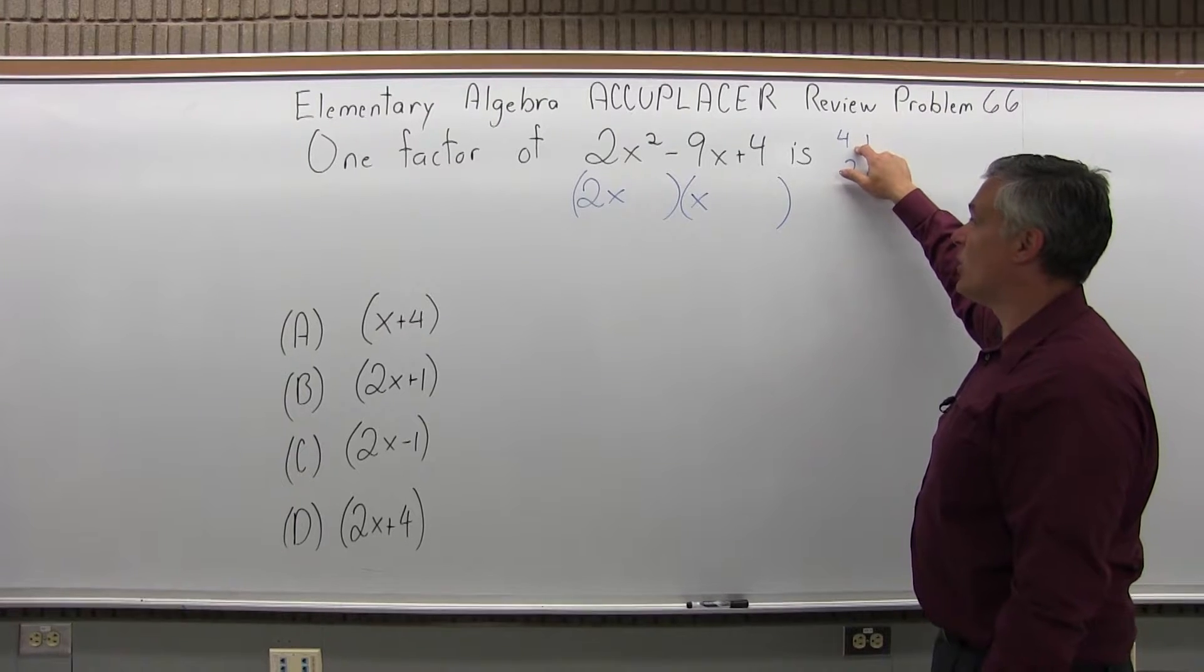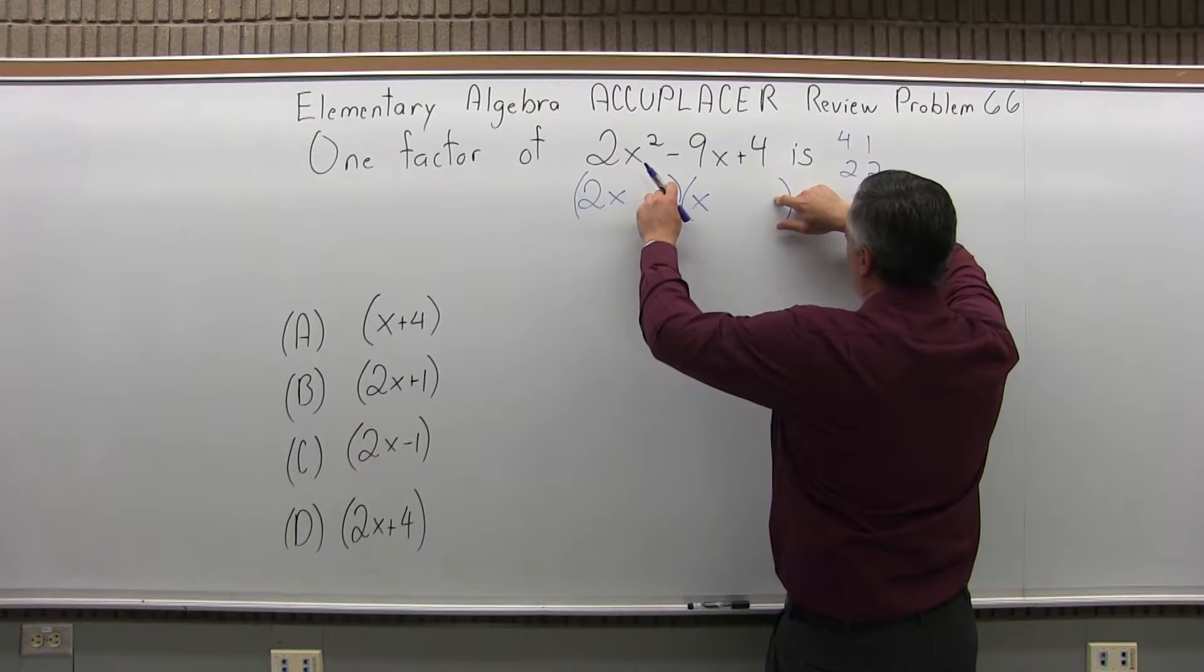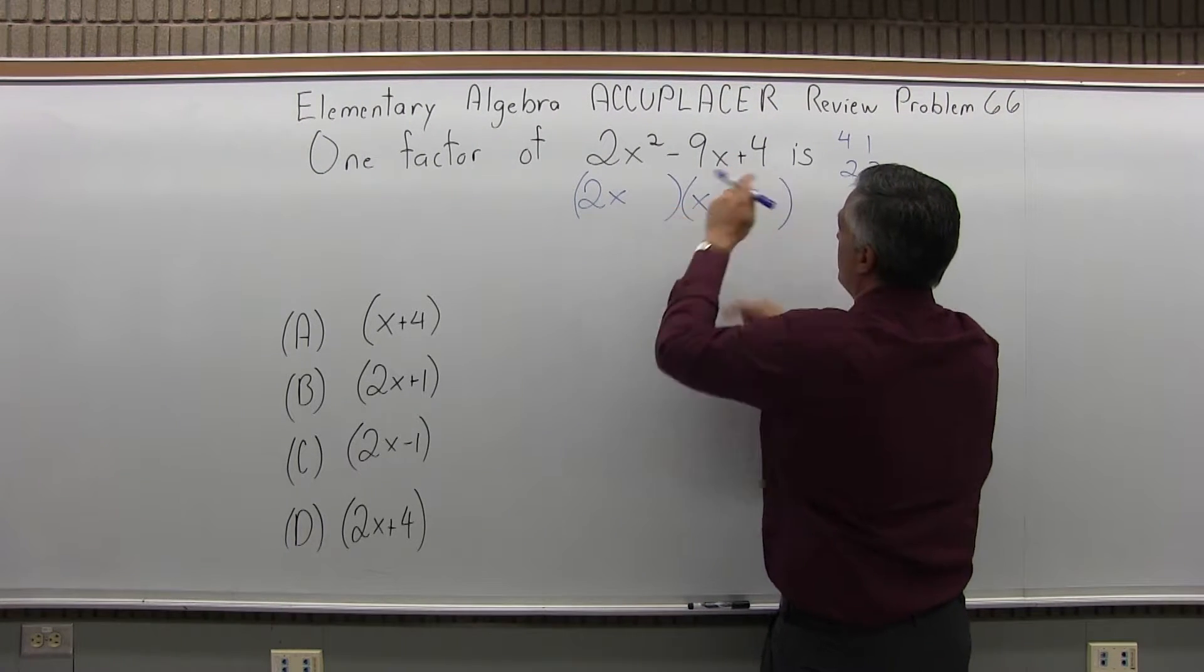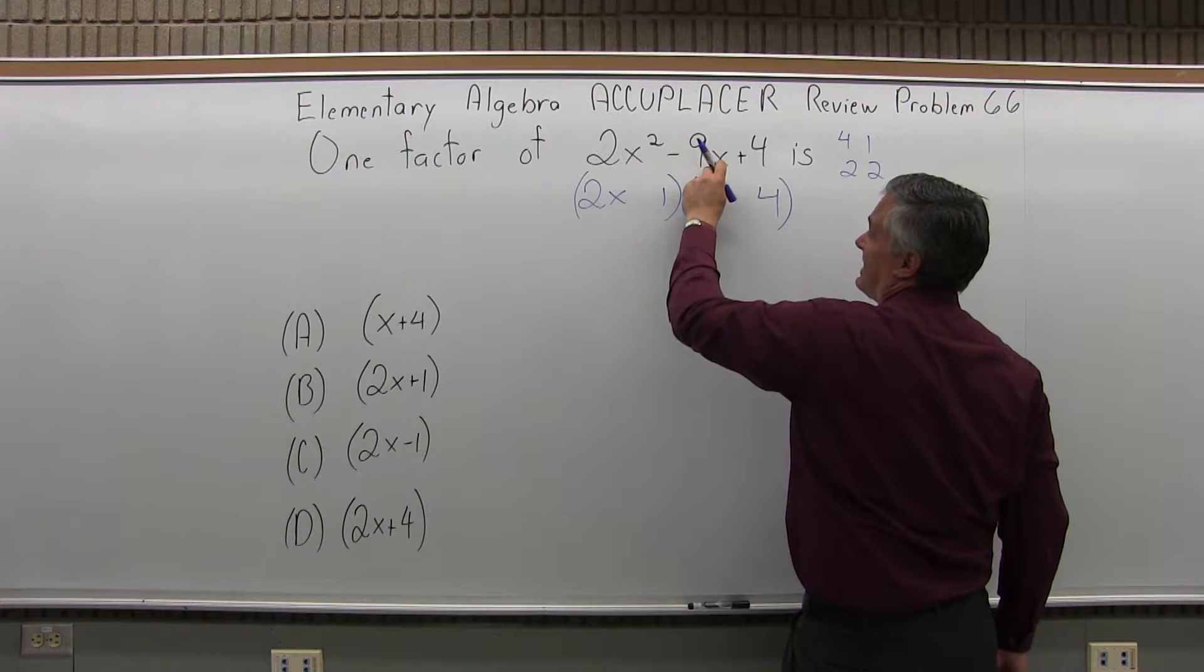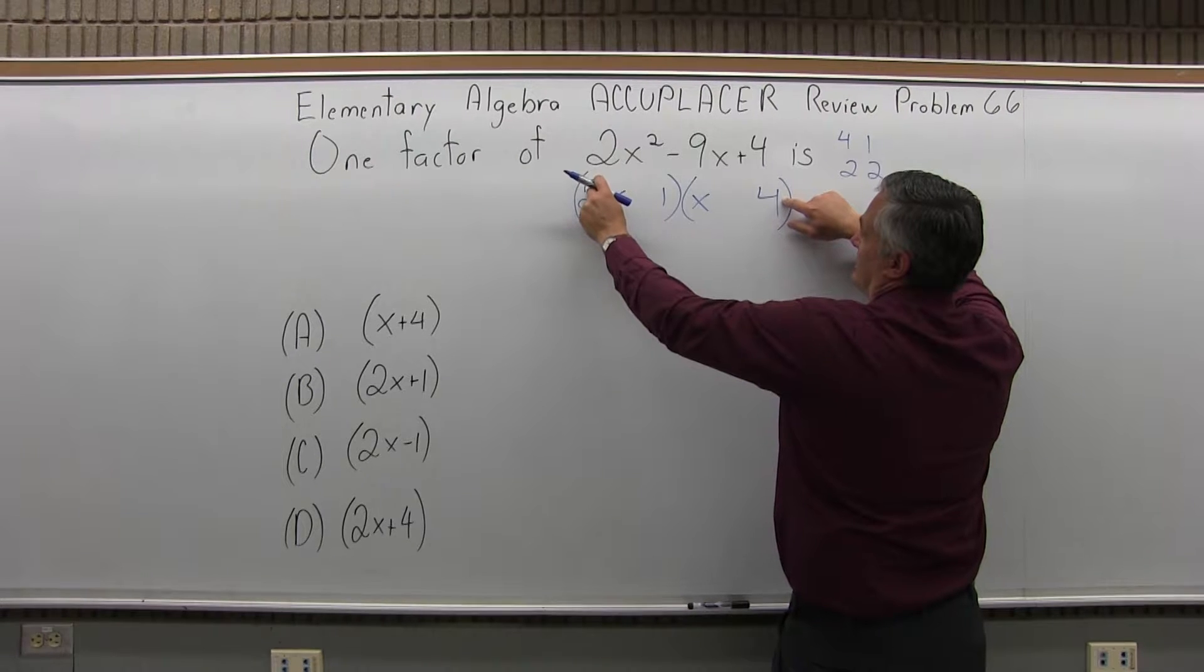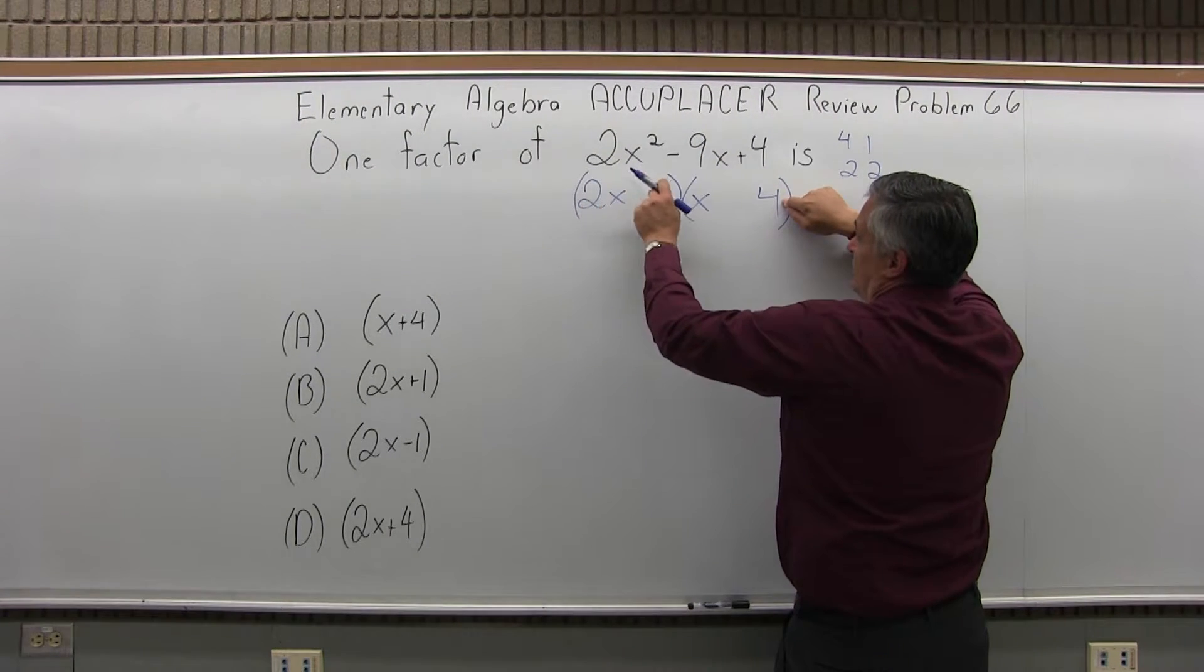So it does wind up being the 4 and the 1. But do you put the 4 in with the 2x, or do you put the 1 in with the 2x? You might have to try both. Because I'm looking at the middle piece as a minus 9x, by putting the 4 in the parentheses that's not with the 2x, I can get pretty close with an 8x. So I'm going to do that.